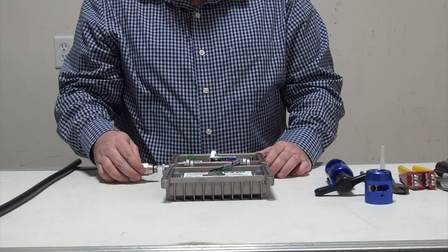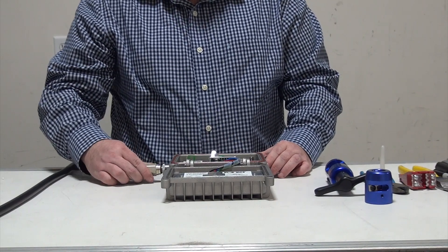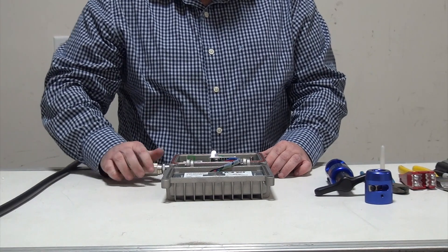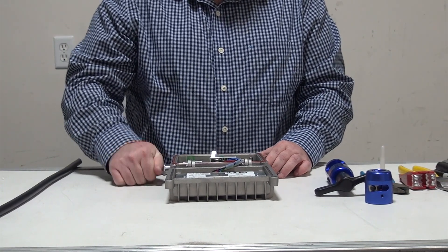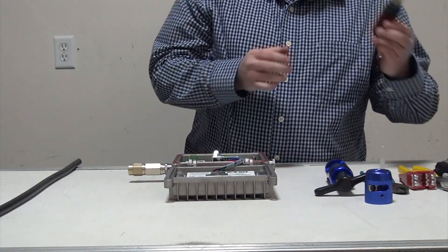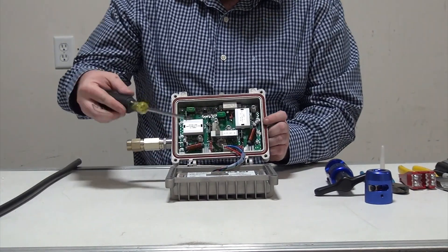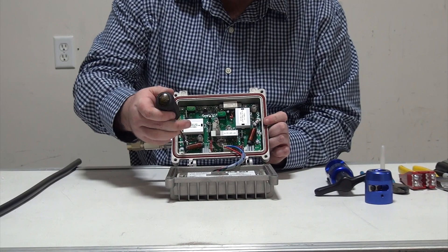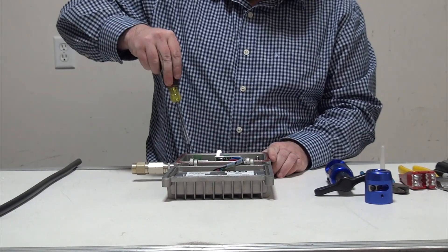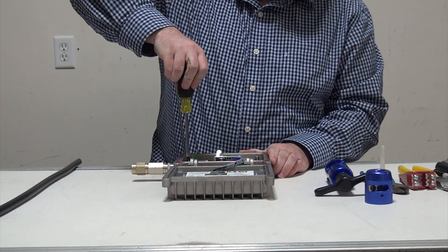With that done, we're going to reinsert it into the side of the TBLE again. We're going to use a Phillips head screwdriver and tighten that seizure screw back down. This will ensure that it is in place and ready to go.